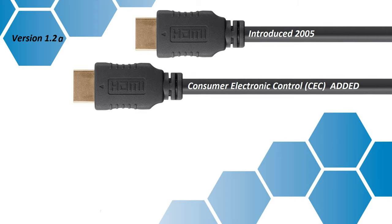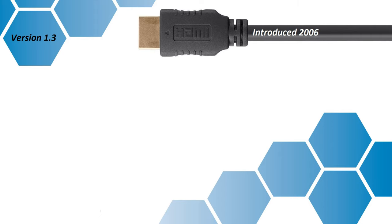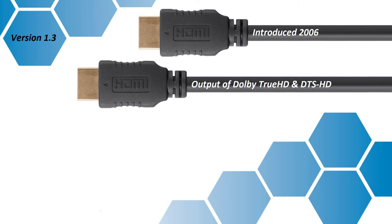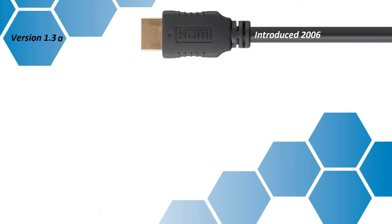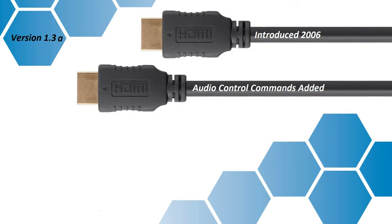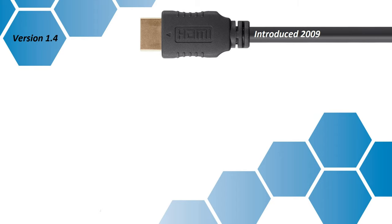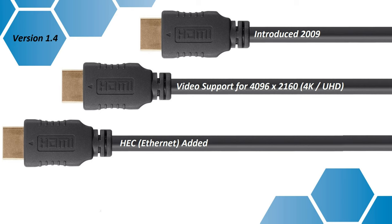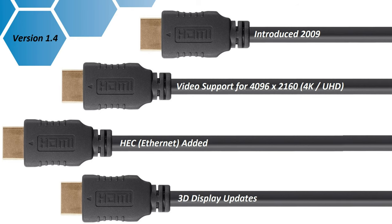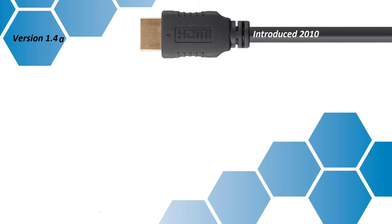Then 2006, version 1.3, added output of TrueHD and DTS, also a Type C connector which started appearing on some computer monitors, and added audio control commands. Version 1.4 in 2009 was also a very significant update, which added video support for 4K. It also added high-speed Ethernet and 3D display support — a pretty crucial update.